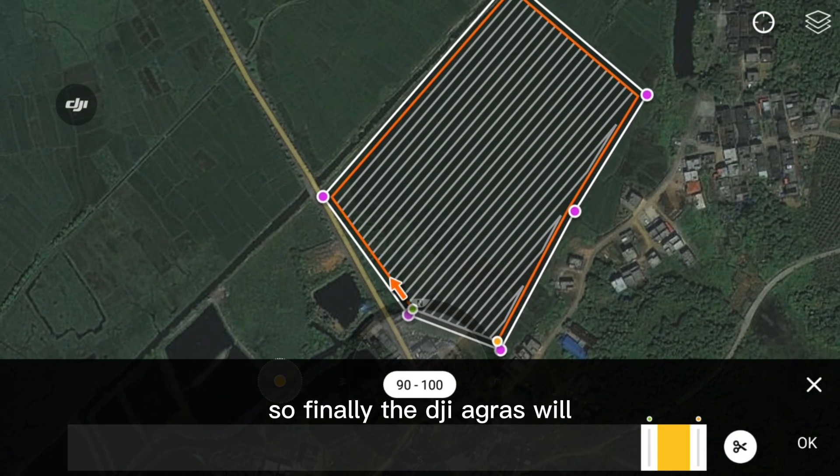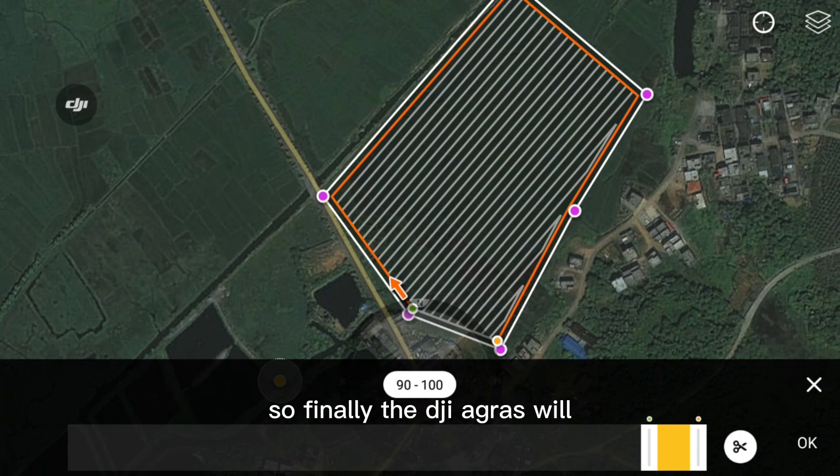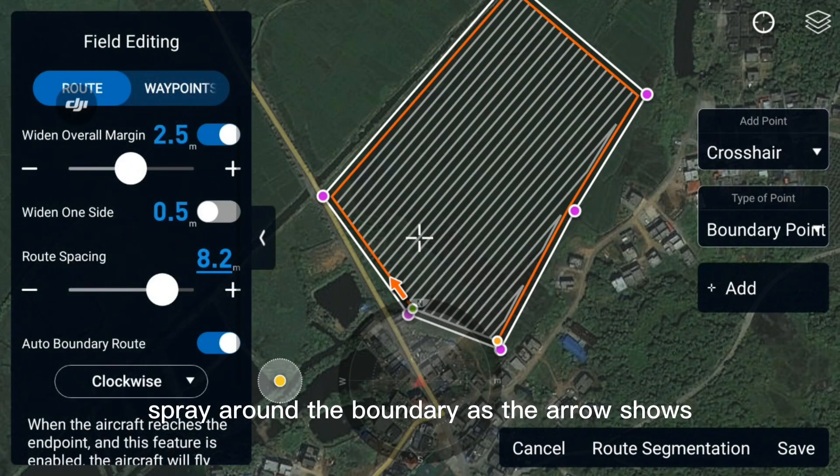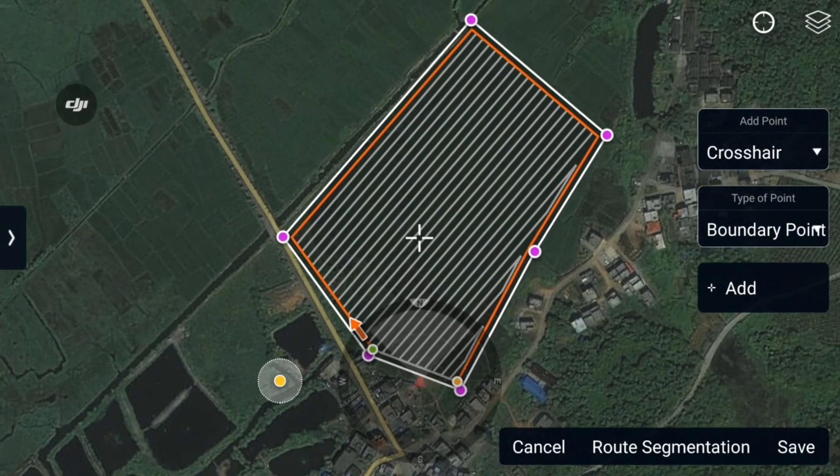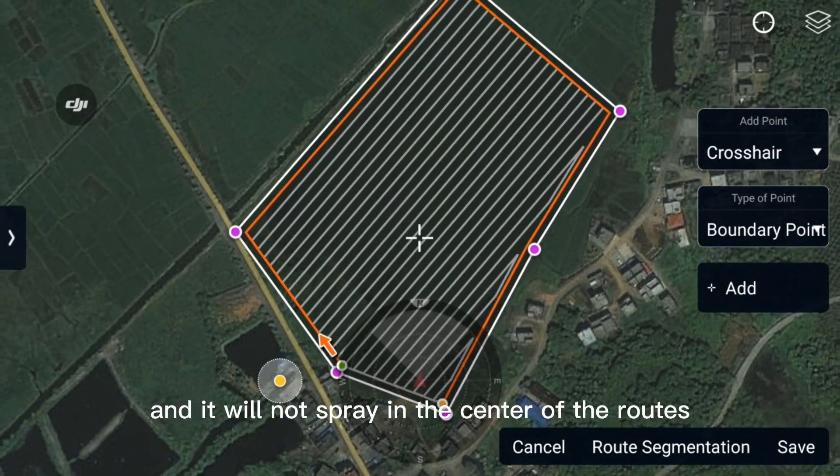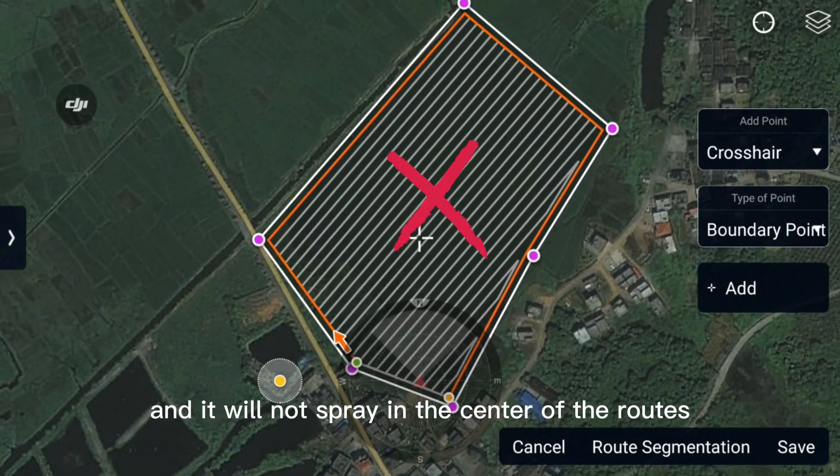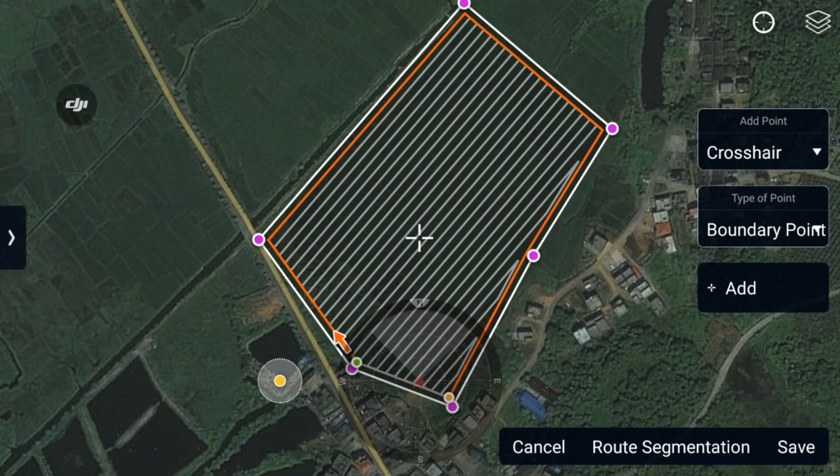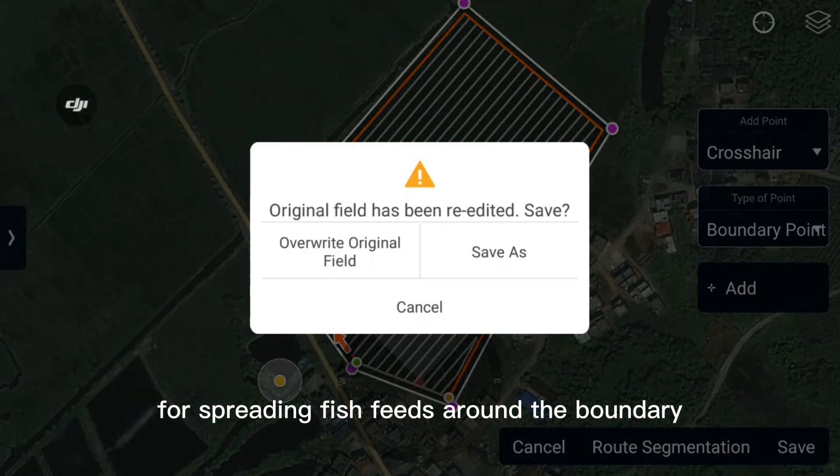So finally DJI Agras will spray along the boundary as the area shows, and it will not spray in the center of the routes. So we could use this function for spreading fish feeds along the boundary.